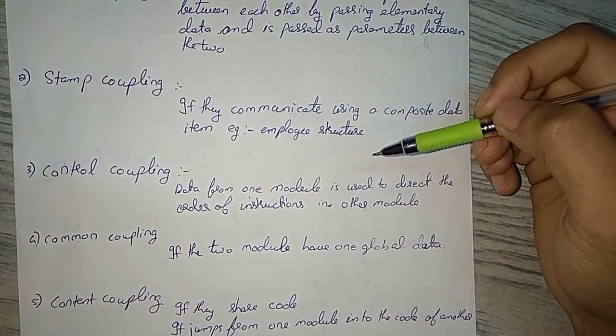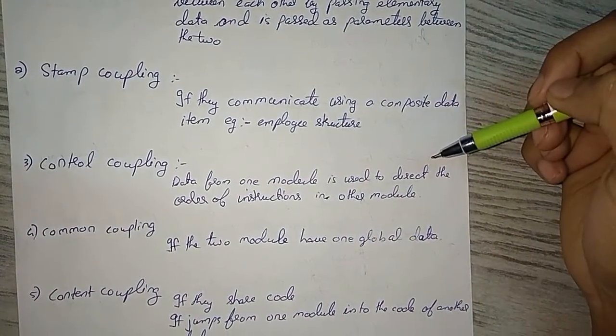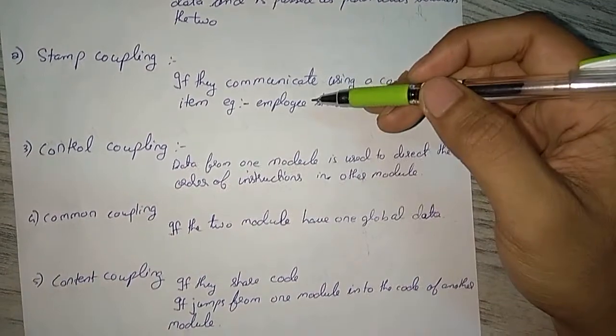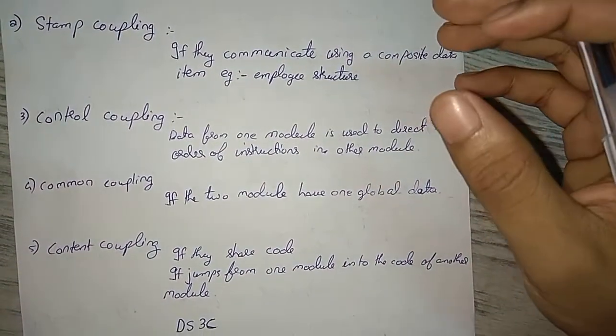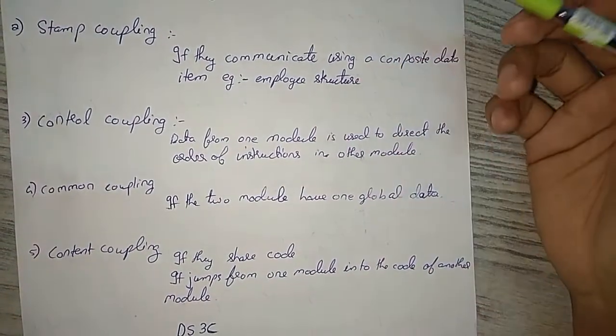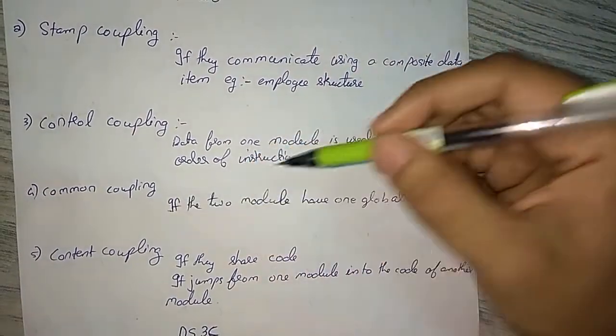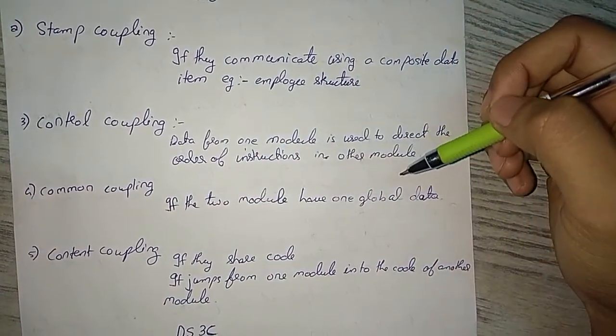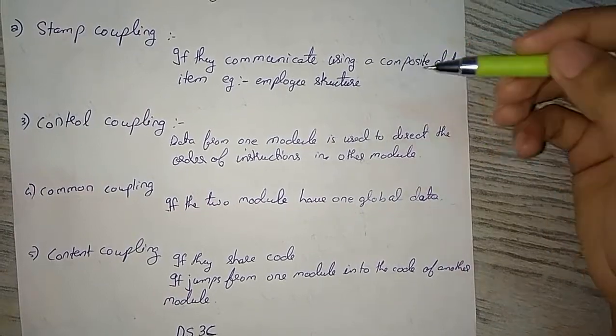In control coupling, one module is directing the order of instruction of the other. That means one module directs the order and instruction of the other module.